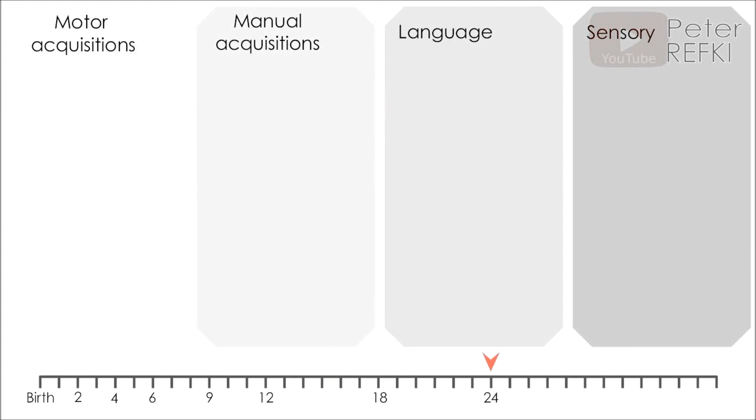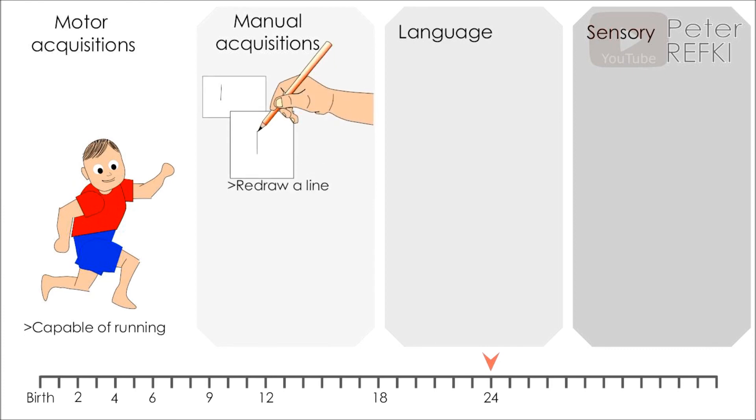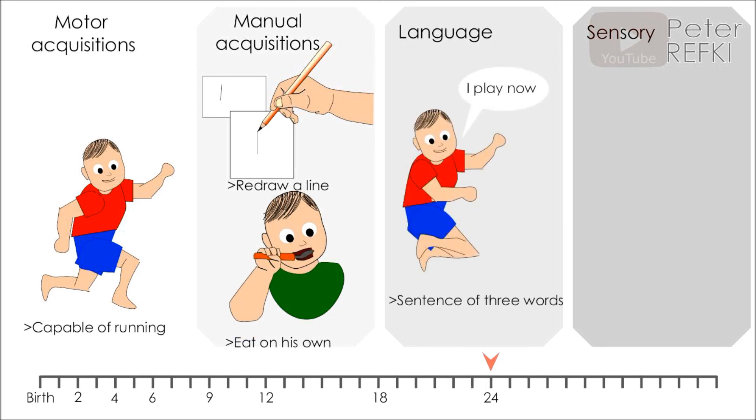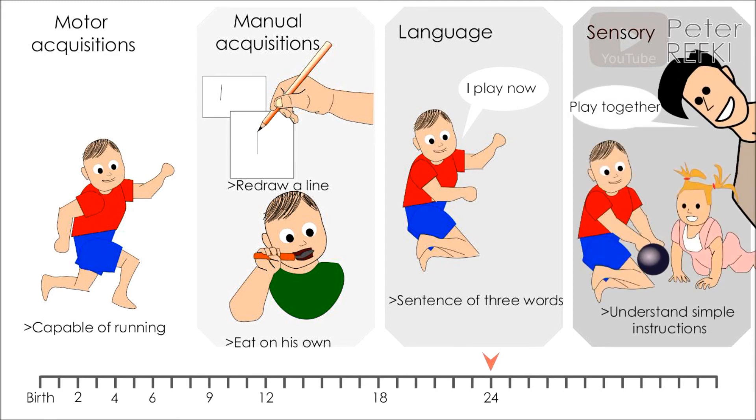At 24 months of age, the toddler is capable of running, can copy and redraw a line, and from 18 to 24 months, he can take a spoon and eat on his own, can formulate a sentence composed of three words, and can understand simple instructions.